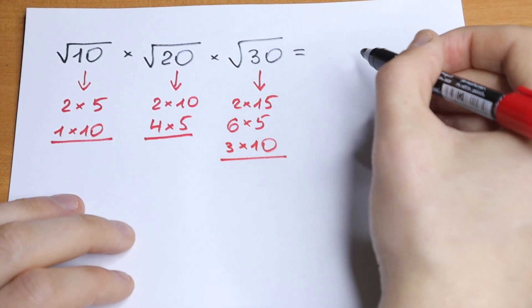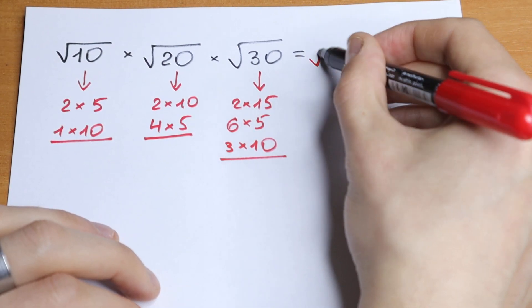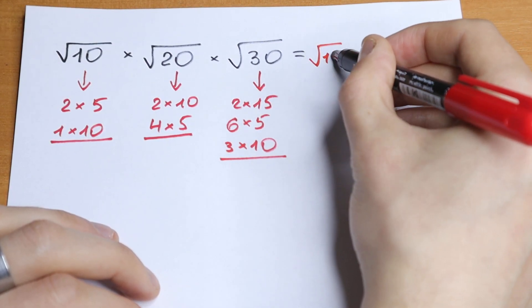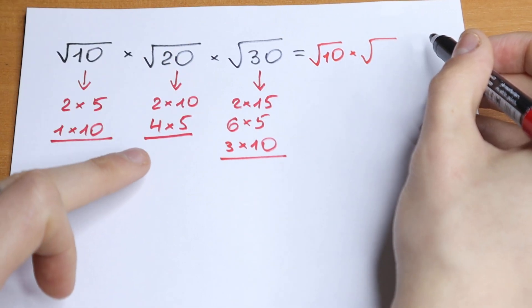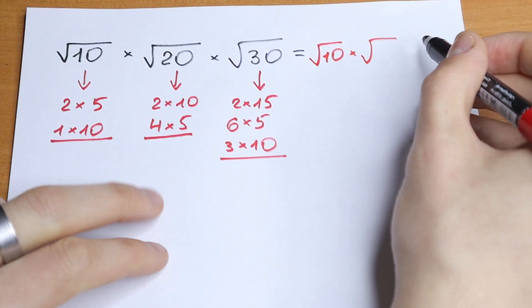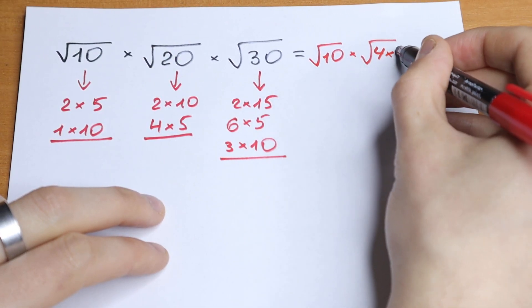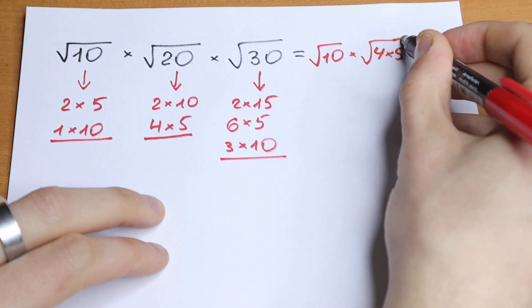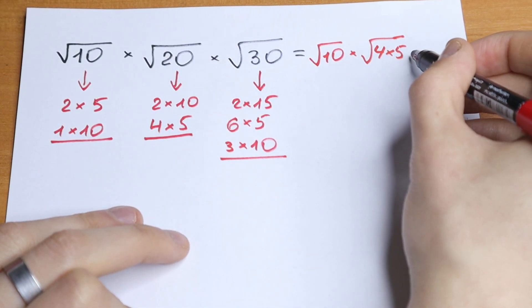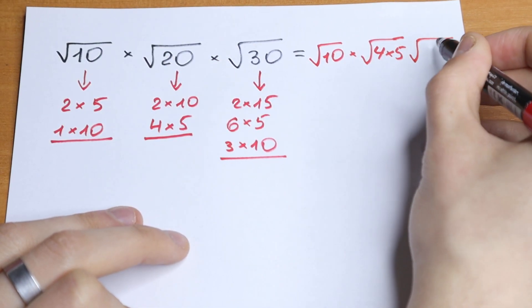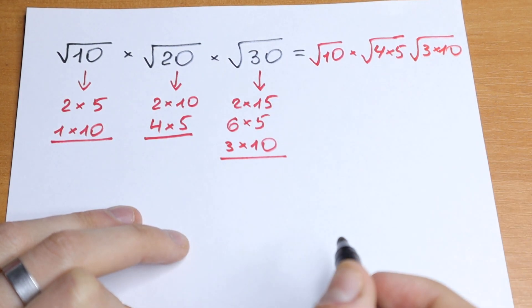So we write this as square root of 10 times — we express 20 as 4 times 5 — times square root of 4 times 5. And for the last step, we express 30 as 3 times 10, so times square root of 3 times 10.